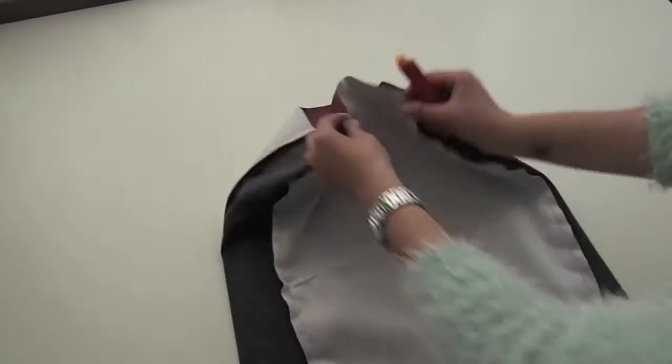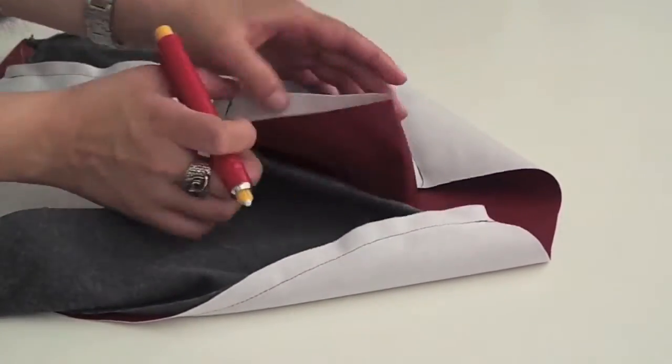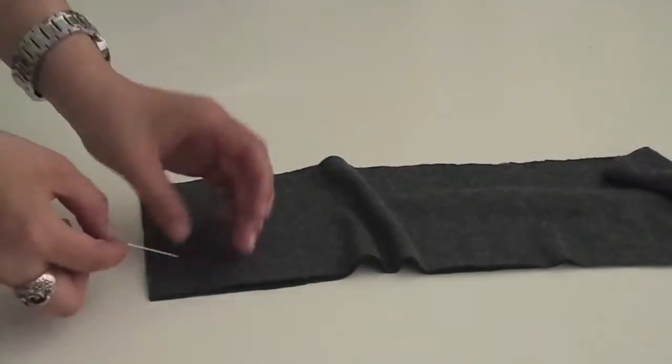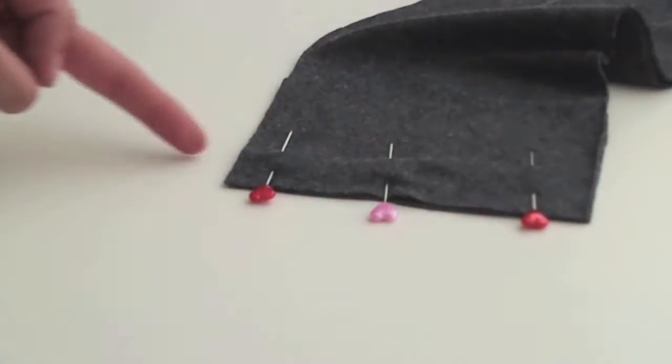So now it's time to put the waistband and the skirt together. I'm going to mark where the middle of both of the faux leather pieces is, and we're going to sew the waistband like so with a straight stitch.